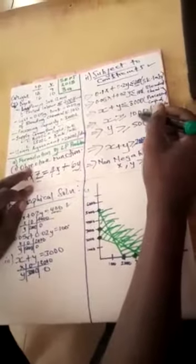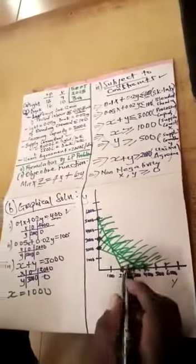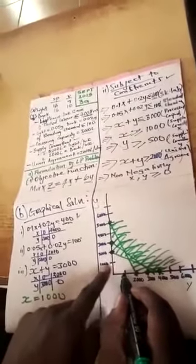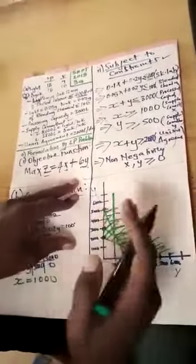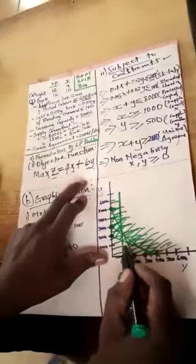That third constraint line is already passing through a region that is already shaded. Then there is the constraint that x must be at least 1000 — the supplier told us to make sure we produce more than 1000. Change the inequality to an equality: if x equals 1000, no matter the value of y, x must always be 1000. That line will cut through the graph vertically at x equals 1000. We must produce more than 1000, so we should not go to the left side of that line. Remove that unwanted side.